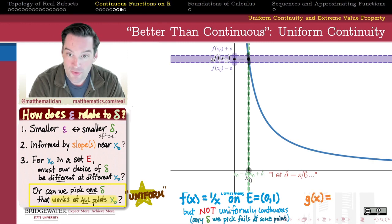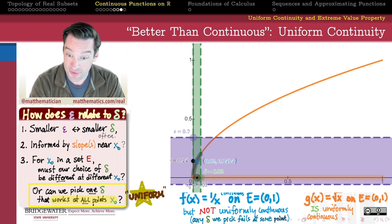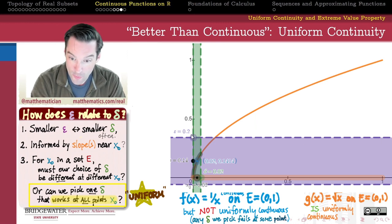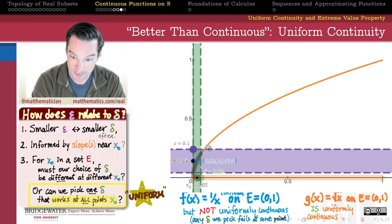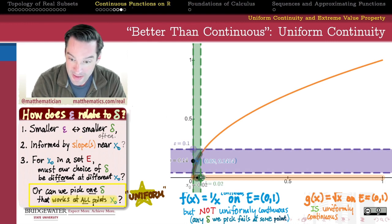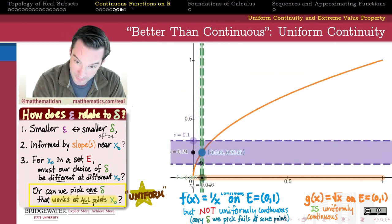On the other hand the square root function on the same domain open interval from 0 to 1 is a uniformly continuous function because no matter what you pick for your epsilon let's pick a different one let's say epsilon equals 0.1 I can pick a delta in response to that choice let's say, I don't know, 0.007